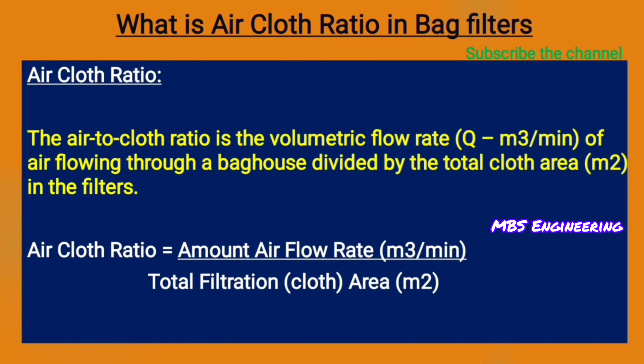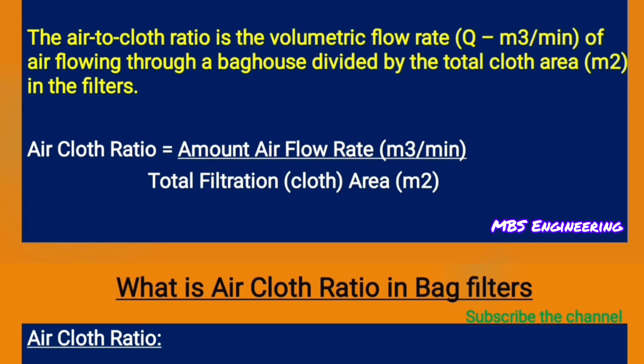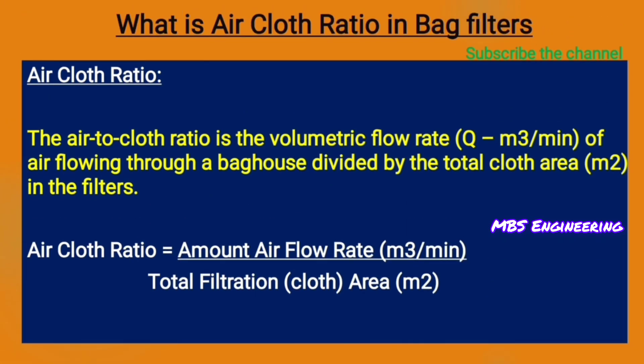Now we are going to understand the air-to-cloth ratio in bag filters. The air-to-cloth ratio is the volumetric flow rate of air flowing through a bag house divided by the total cloth area in the filters. The formula is: air-to-cloth ratio equals the airflow rate in cubic meters per minute divided by the total filtration or cloth area in square meters.